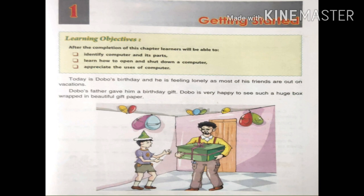All of you listen carefully. Today is Dobo's birthday and he is feeling lonely as most of his friends are out on vacations. Dobo's father gave him a birthday gift. Dobo is very happy to see such a huge box wrapped in beautiful gift paper. He quickly opened the gift to find what is inside the box. Now, can you guess what is inside that box?